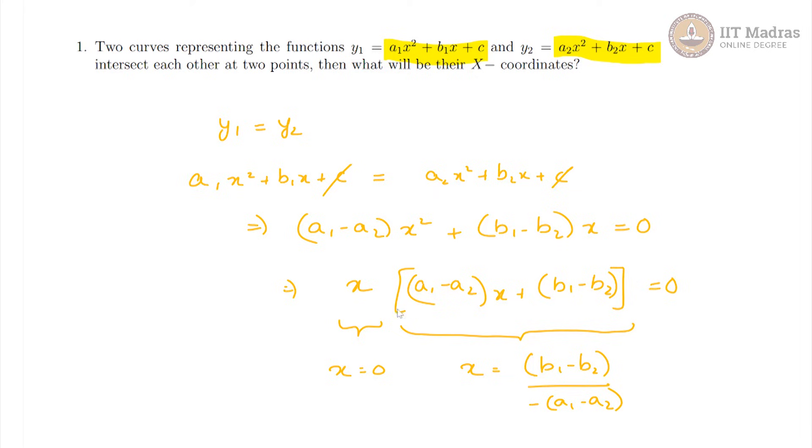So, this is a product of two terms and that product of two terms is 0 which means either of those two terms has to be 0. So one solution is x being 0, in the other one, you get this as the solution.